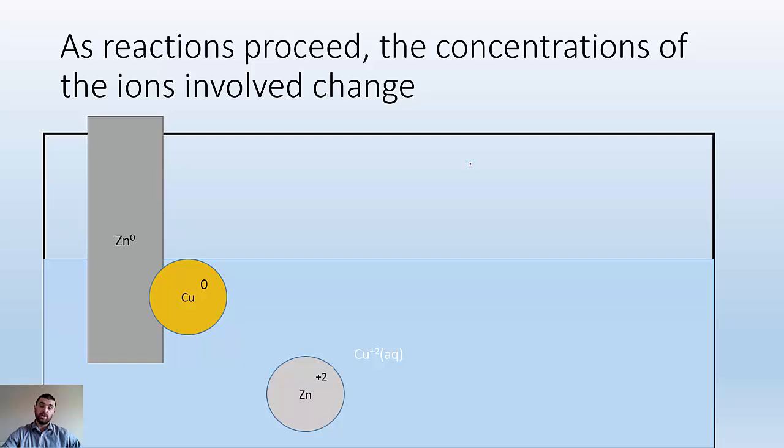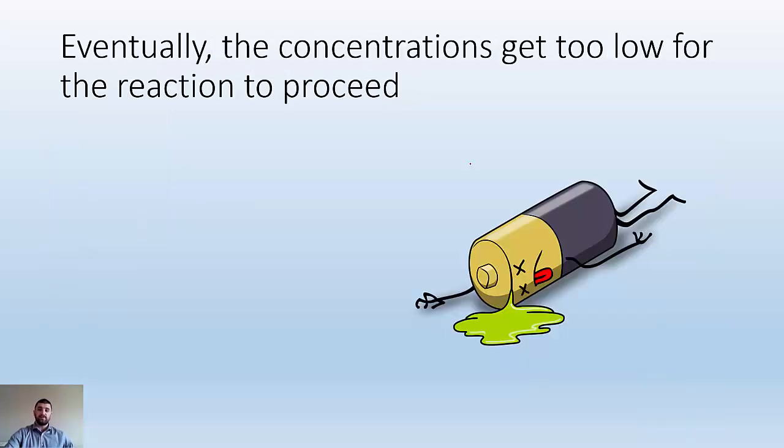What's going to happen at the zinc anode? The copper is going to continue to get reduced there and form a copper film over it. Eventually, the concentrations get too low for the reaction to proceed at all, and that's when you get dead batteries. The concentrations have gone to zero and have all been used up. Process stops. No more voltage.